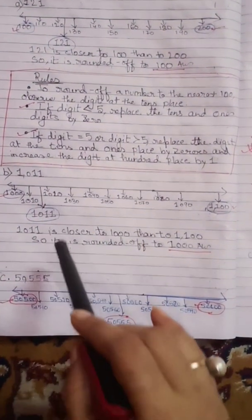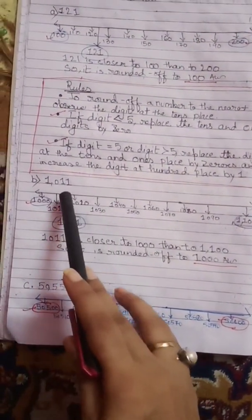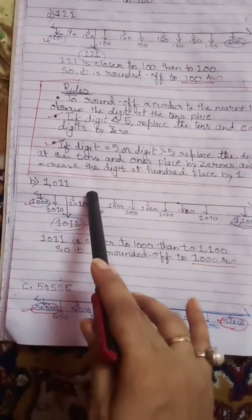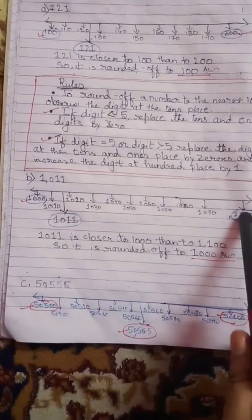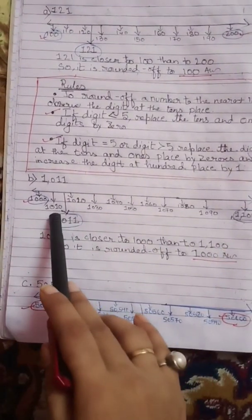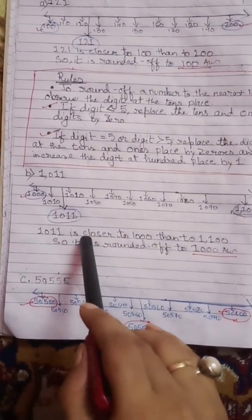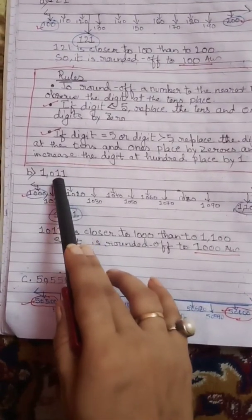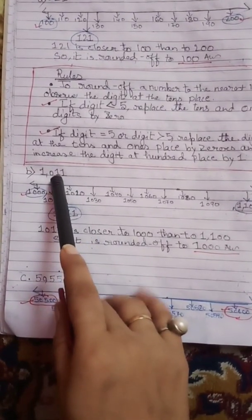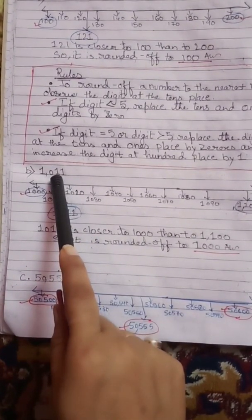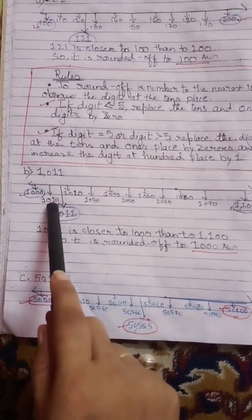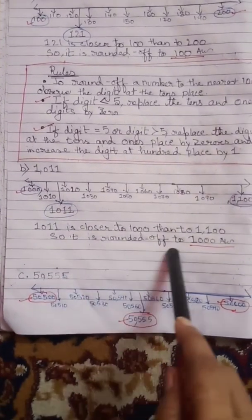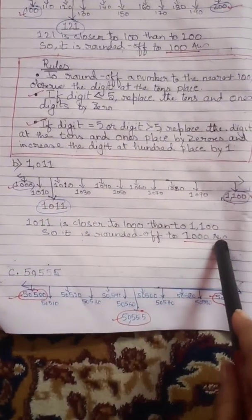Let's move to example B: 1,111. We will make a number line and show where it lies. The tens place digit is 1, which is less than 5. So it will be closer to 1,100. It is rounded off to 1,100.